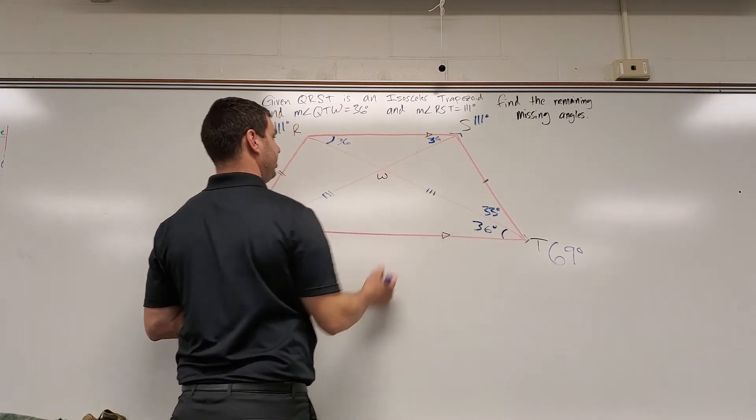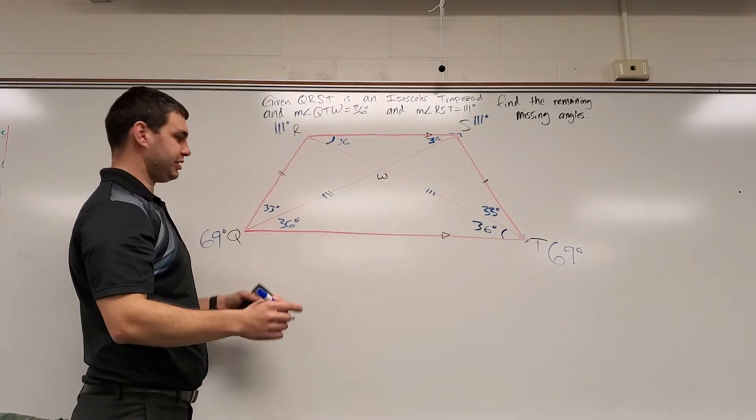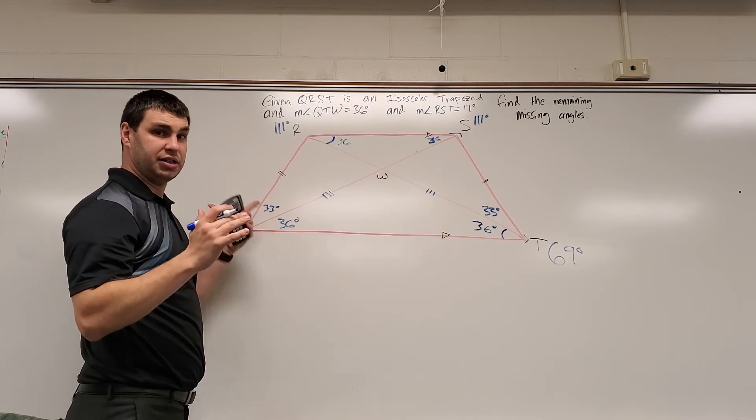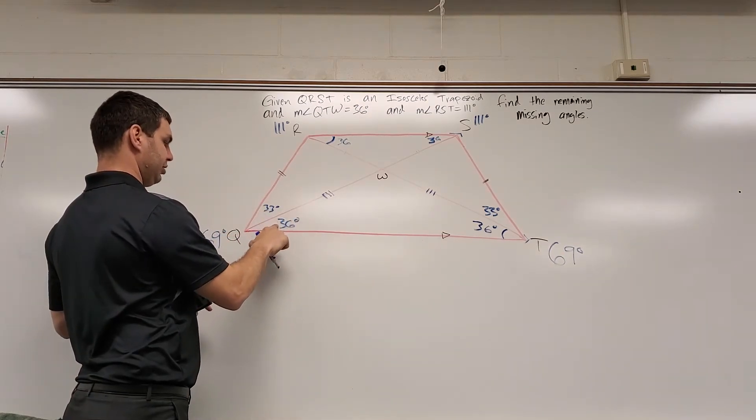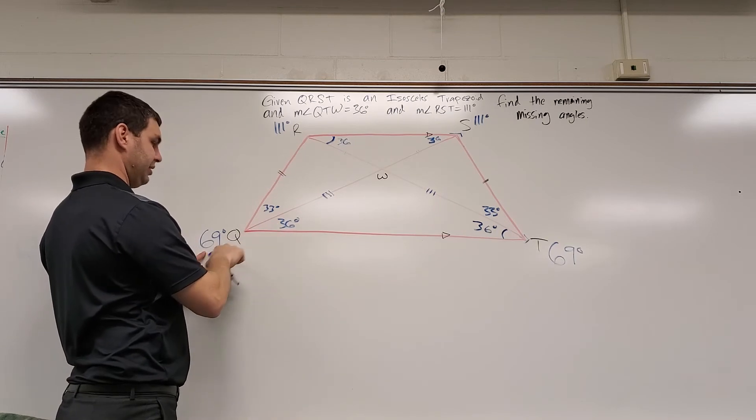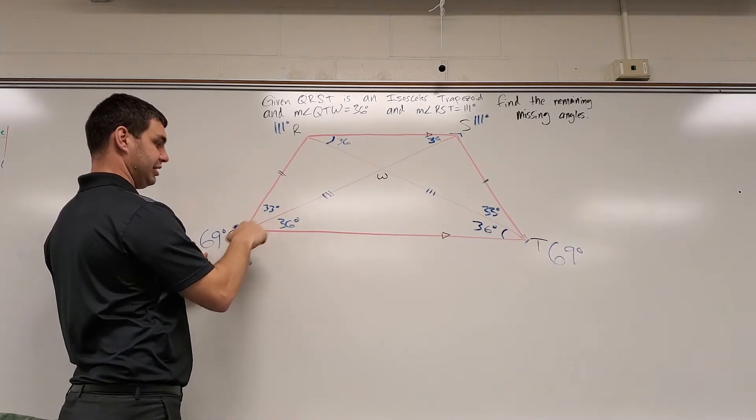Now the temptation here is to say, hey, we're just marking down 36 so this must be 33. No, that's not true. The reason why is because down here, this was 36, and if I subtracted 36 from 69, I got 33. I have to do the same idea up here with 111.